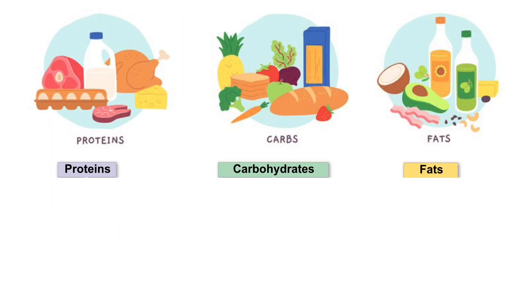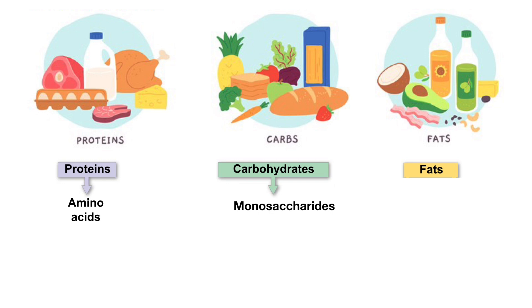After all, living things consume more than glucose for food. To start, let's recall that during the digestion of nutrients we break down proteins into individual amino acids, carbohydrates like disaccharides and polysaccharides into monosaccharides, and any fats or triglycerides into glycerol and fatty acids. It is these monomers of nutrients that are absorbed through our small intestines into our bloodstream and can enter our cells to be used for energy.